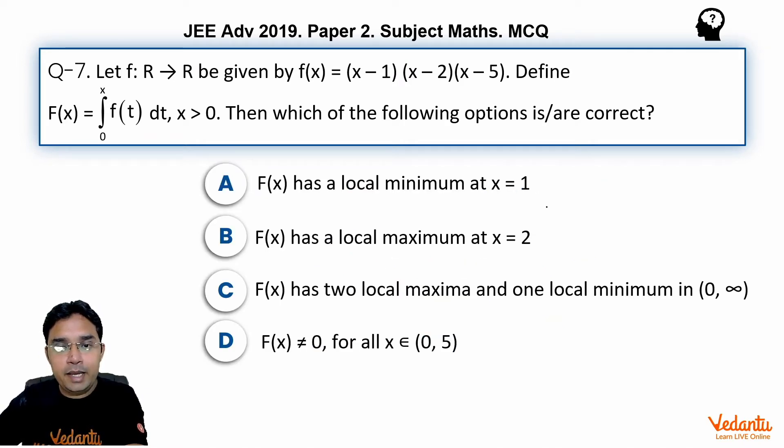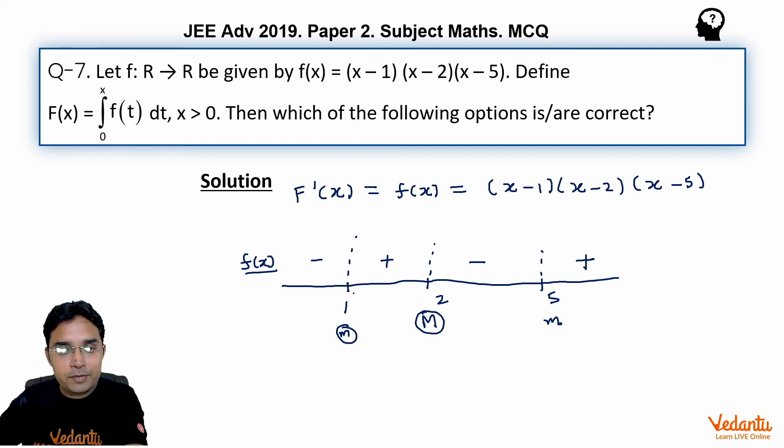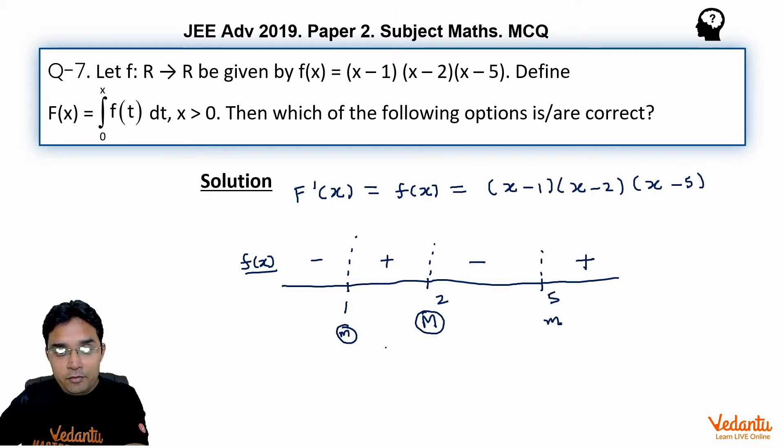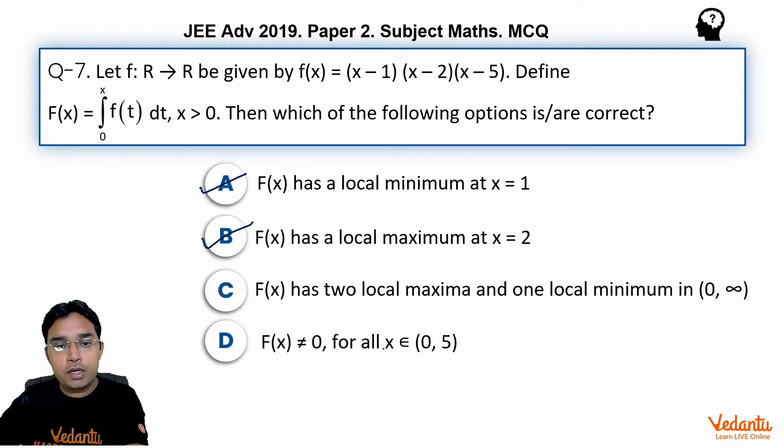So if we go back to the options, we can see F(x) has local minimum at x = 1, which is absolutely correct. F(x) has local maximum at x = 2, this is also absolutely correct. Now coming to the next one, F(x) has two local maxima and one local minima. In fact it is opposite—it has two local minima and one local maxima, so option C is not correct.